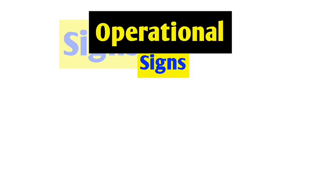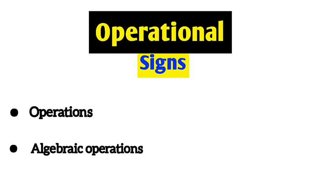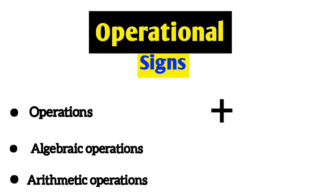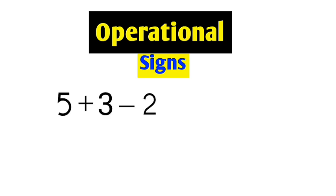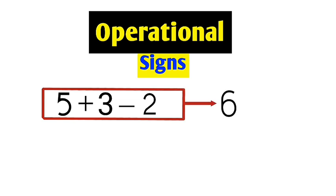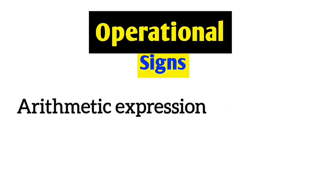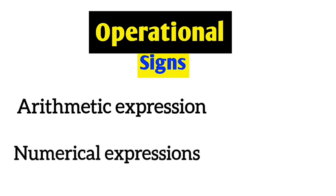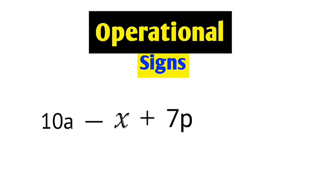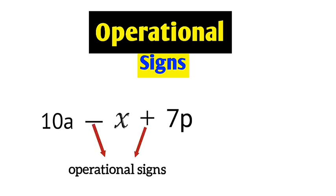The next terminology is operational signs. In mathematics, operational signs can also be referred to as operations, algebraic operations, or arithmetic operations. These operational signs include addition, subtraction, multiplication, division, and so on. Operational signs perform actions on two or more numbers to produce a resulting number. The operational signs in algebraic expressions are the same as those in arithmetic expressions. In conclusion, there can never be an algebraic expression without an operational sign.